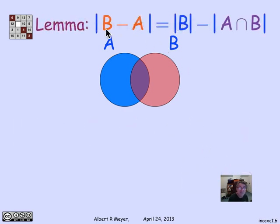The lemma says |B-A| = |B| - |A∩B|. Here we're back to the Venn diagram. A is blue, B is reddish, and the intersection region, that lens-shaped region, is shown in purple. We want to prove this lemma.